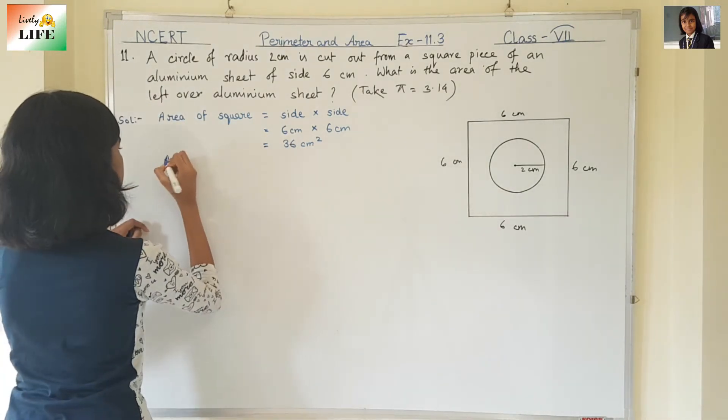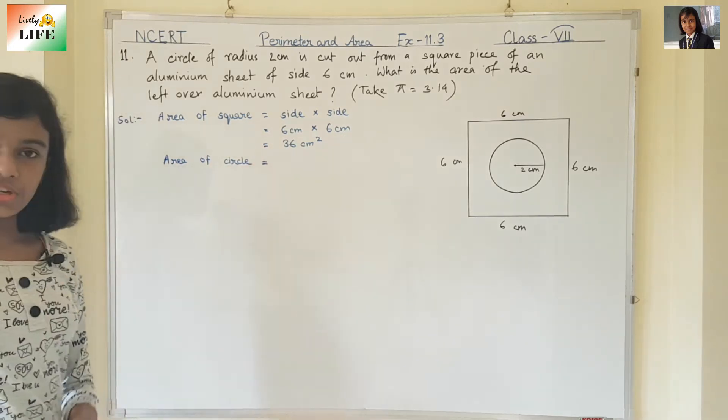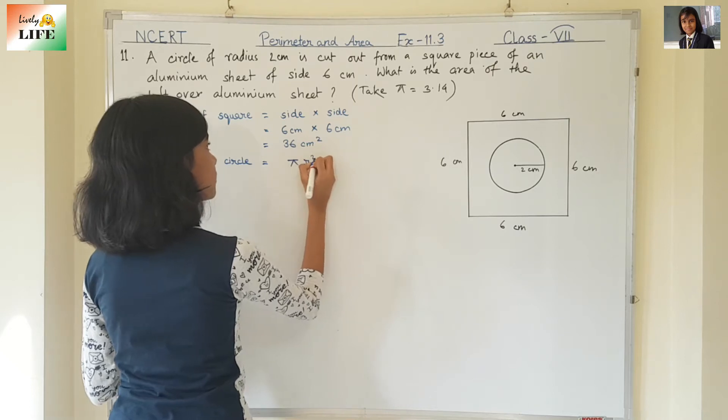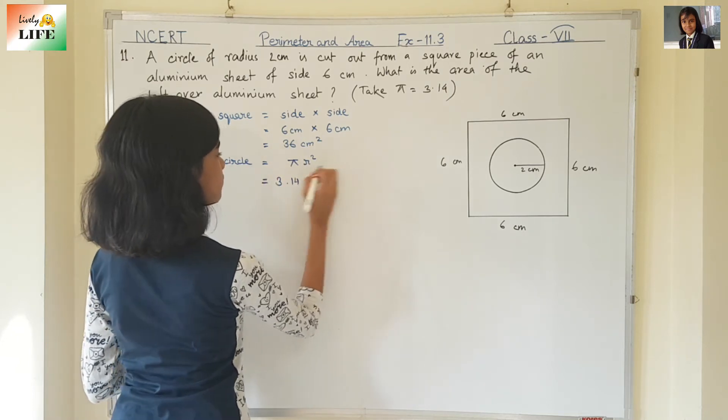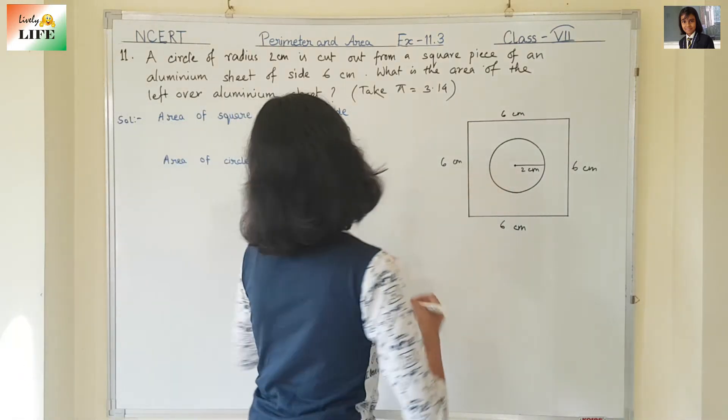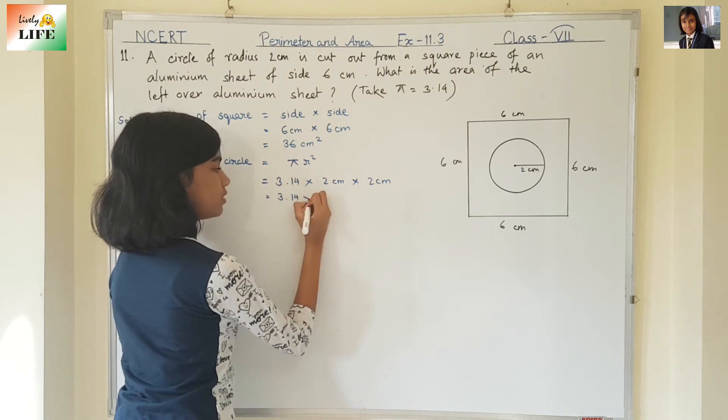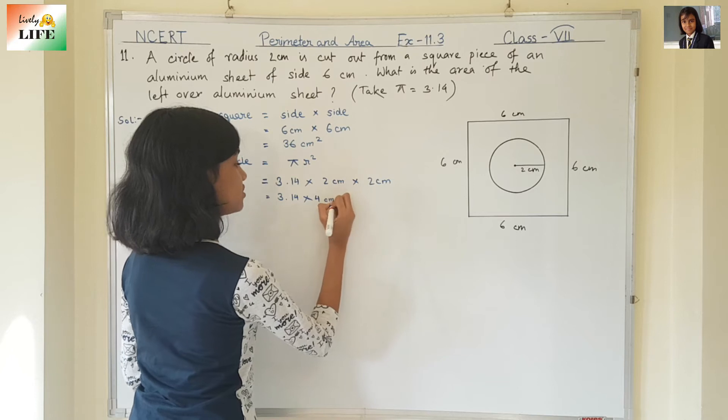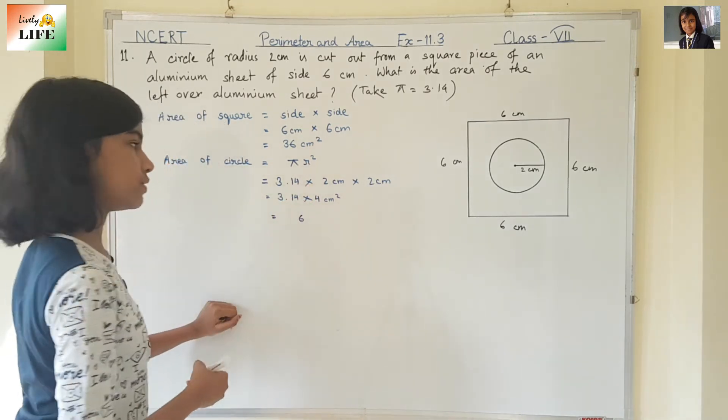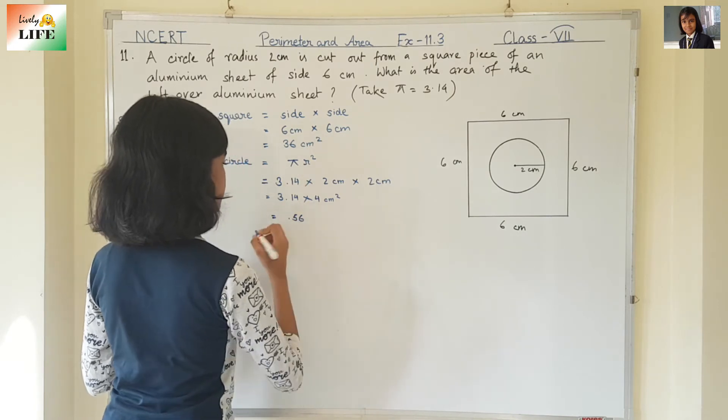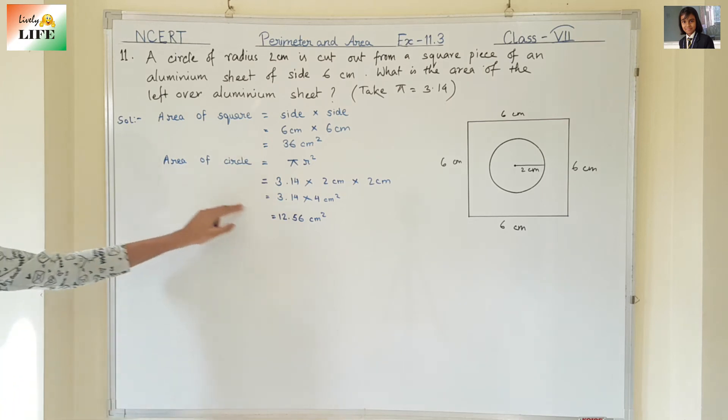Now, area of the circle. Formula of area of circle is pi r square. Take pi as 3.14. r square is r into r. What is the radius? It is 2 cm. 2 times 2 is 4 cm square. cm into cm. Now, 12.56 cm square. This is the area of the circle.